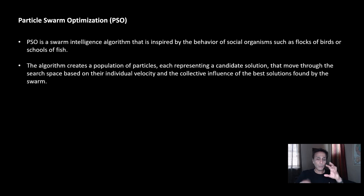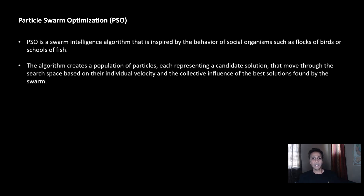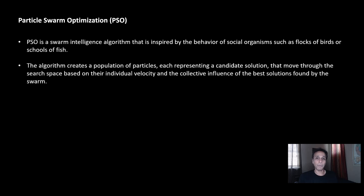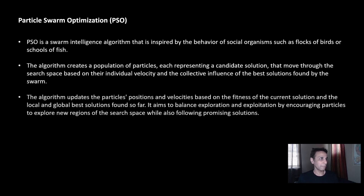A single particle may find the right solution first. There are two components here. One is the self-conscious component — I'm aware of myself and I found the best food here. But once I know what else is going on, I also understand the social behavior — someone else found even better food, so that may be the better solution. These two components — local best and global best — are the core of particle swarm optimization.